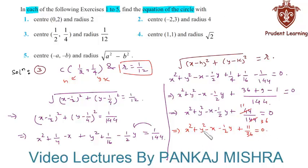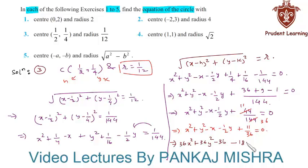Multiplying the whole equation throughout by 36, this gives 36x square plus 36y square minus 36x minus 18y plus 11 equal to 0. This is the required equation of the given circle.